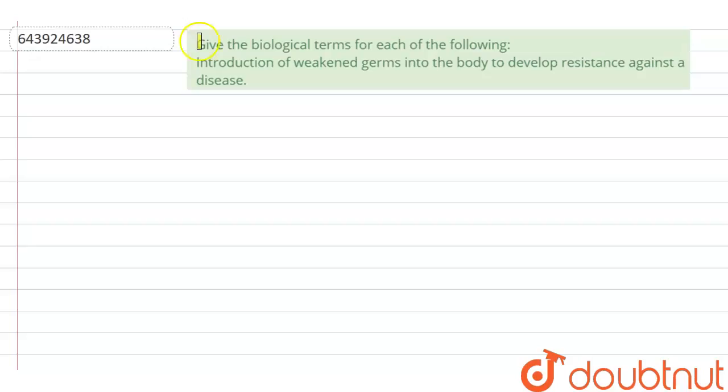...see the following question. Question is: give the biological terms for each of the following. The statement is: introduction of weakened germs into the body to develop resistance against the disease.